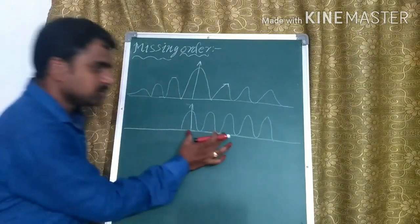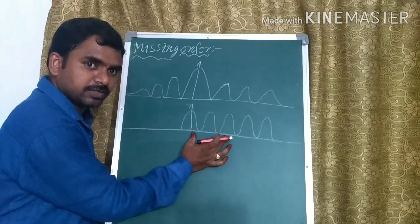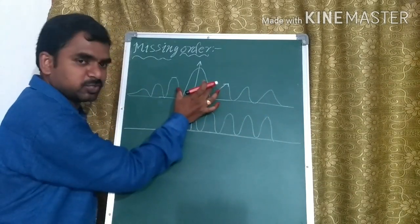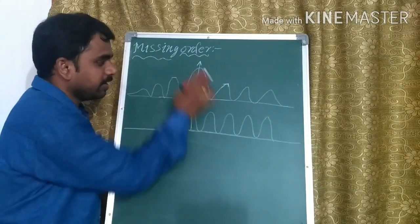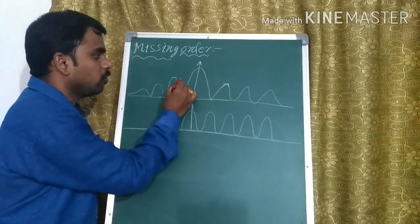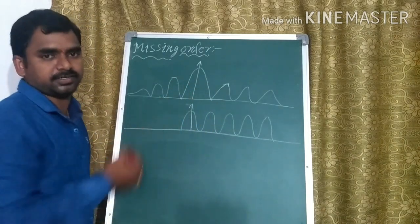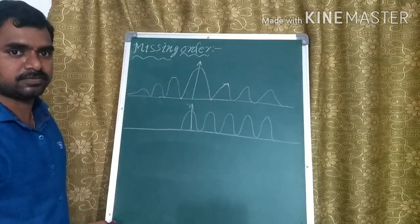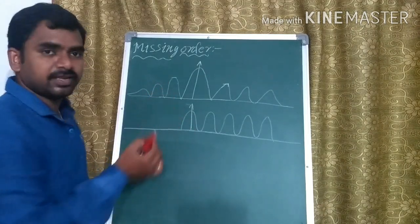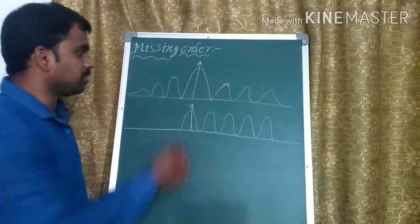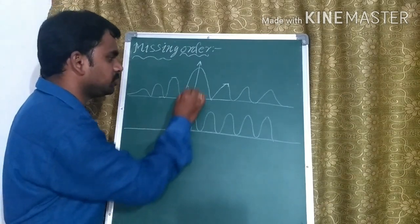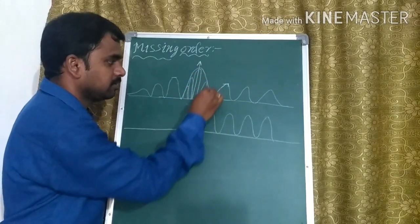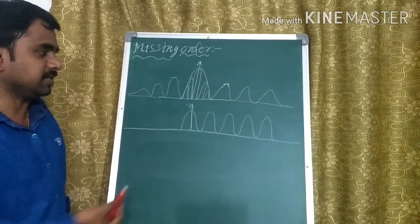Previously I mentioned that — suppose if we take this screen — if we fit these two patterns together, in between those two we may miss some of the orders, some of the interference orders we will miss. Because, as we saw in the previous session, the intensity distribution curves are combined like this.